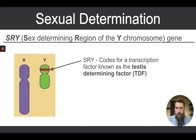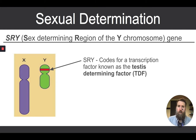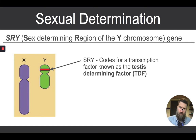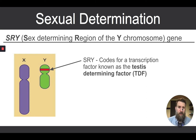On the Y chromosome is a gene called the SRY gene — the sex-determining region of the Y chromosome. The SRY gene doesn't necessarily have to be on the Y chromosome, and sometimes is not, but in the majority of cases it is. This SRY gene gets transcribed and translated, like all genes, to produce a protein. This protein is called the testes determining factor, or TDF.